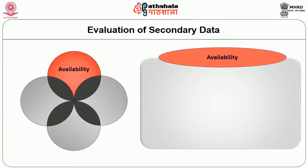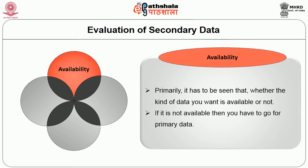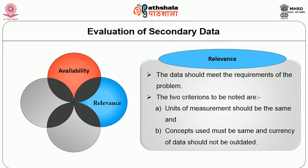Next, we can see the evaluation of secondary data. Evaluation means the following four requirements must be satisfied. First, availability — it has to be seen whether the kind of data you want is available or not. If it is not available, then you have to go for primary data. Second, relevance — the data should meet the requirements of the problem. The two criteria to be noted are: units of measurement should be the same, and concepts used must be the same and currency of data should not be outdated. Third, accuracy — in order to find how accurate the data is, the following points must be considered: specification and methodology used, margin of error should be examined, and the dependability of the source must be seen.